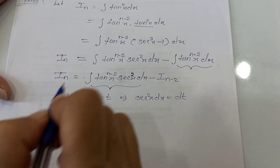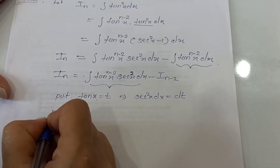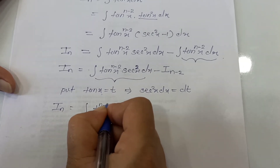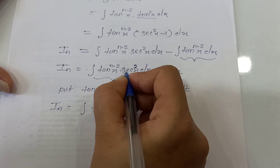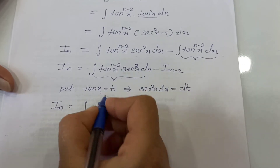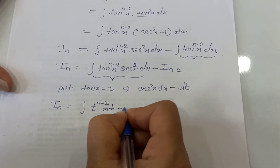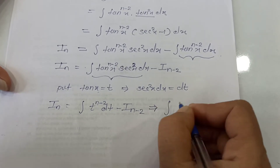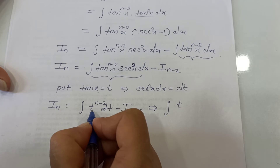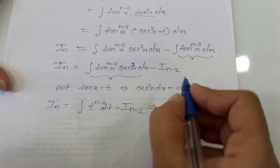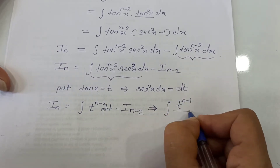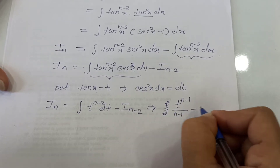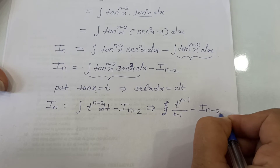Applying the substitution, the integral becomes: the integration of t raised to n minus 2 dt, minus I_{n-2}. Evaluating this integration: the integral of t raised to n minus 2 is t raised to n minus 1 upon n minus 1, and the integration sign is gone. So we have t raised to n minus 1 upon n minus 1, minus I_{n-2}.